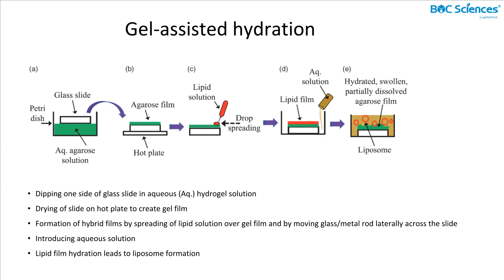Fifth, gel-assisted hydration. A thin film of a hydrogel-forming polymer is formed on a glass coverslip and dried before depositing a thin lipid film. The system is then hydrated with buffer solution to generate GUVs.